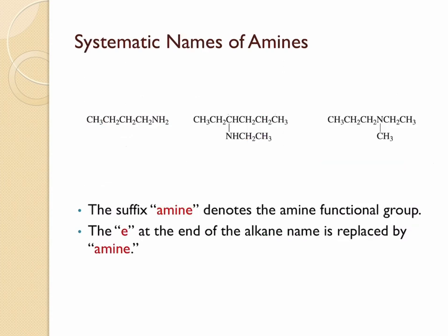In systematic nomenclature, amines are named exactly the same way as alcohols. Amines are generally named as alkanamine, where the E in alkane is replaced by amine. We also need to make sure that the carbon where the amino group is attached gets the lowest possible number, and the position of the functional group must be specified in the name.